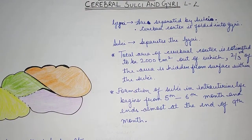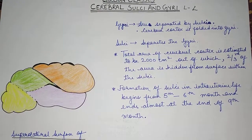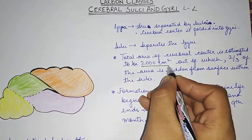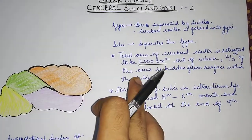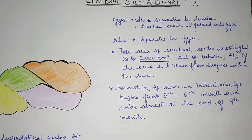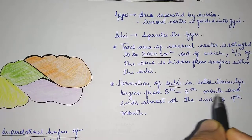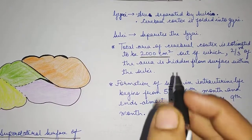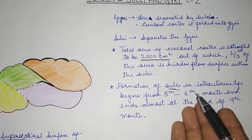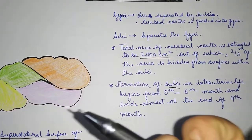The total area of the cerebral cortex is 2000 centimeter square, and out of this, two-thirds of the area is hidden from the surface within the sulci. The formation of sulci in intrauterine life begins in the fifth to sixth month and ends almost at the end of nine months, so it takes about three months for the sulci to develop.